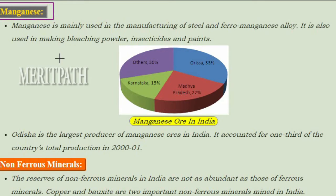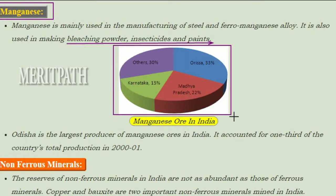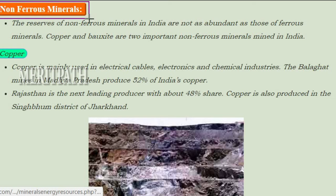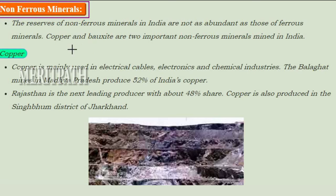Manganese is mainly used in the manufacture of steel and ferro-manganese alloys. It is also used in making bleaching powder, insecticides, and paints. Odisha is the largest producer of manganese ores in India, accounting for one third of the country's total production in 2000–2001. Madhya Pradesh, Karnataka, and other states also contribute.